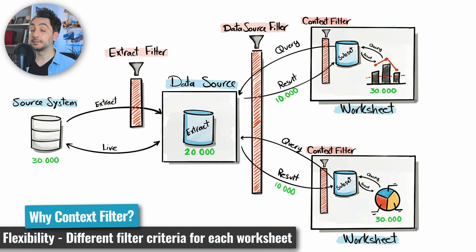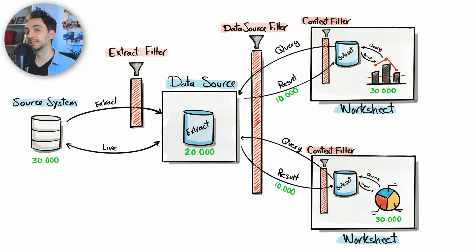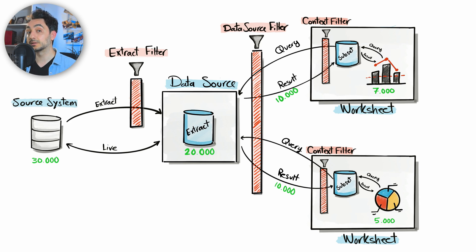The power of the context filter is flexibility. You can define different filters for different worksheets to fulfill different requirements, while still reducing data size to optimize performance. For each worksheet, you can decide whether to apply a context filter or use the full data. For example, worksheet one might use a context filter reducing records to 7k, and worksheet two might use a different context filter reducing records to 5k. There is a trade-off between flexibility and the performance cost of creating those temporary tables.